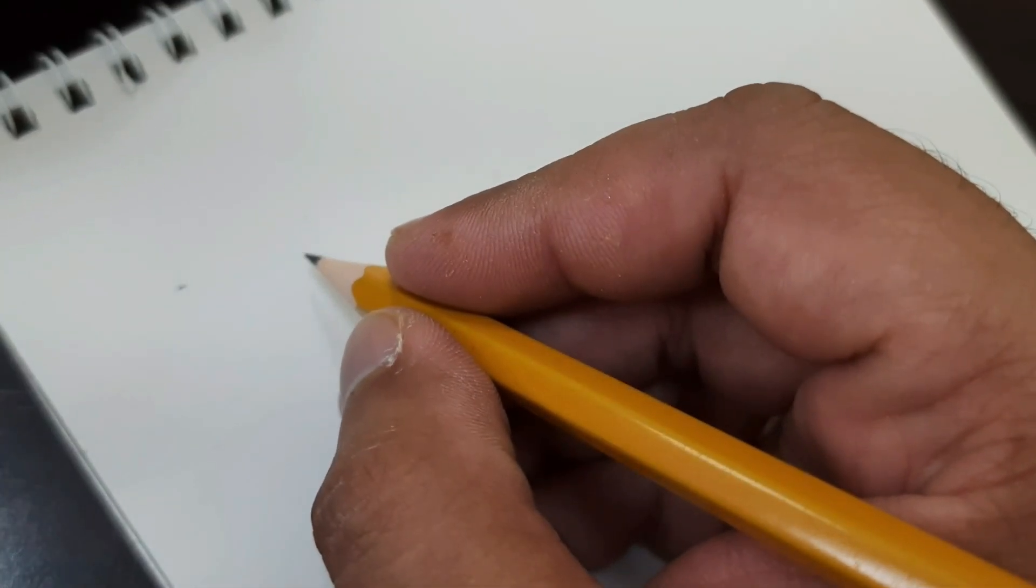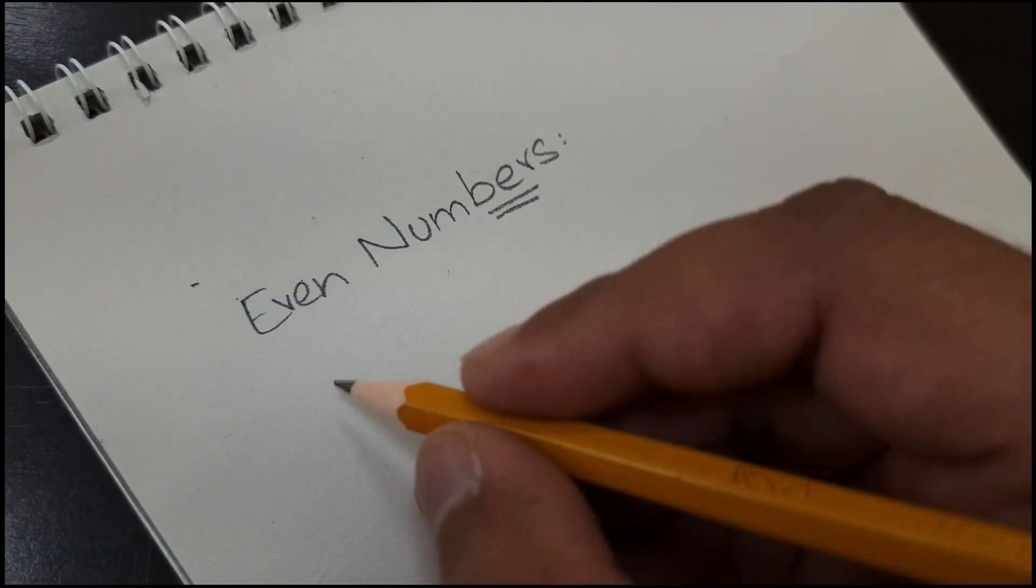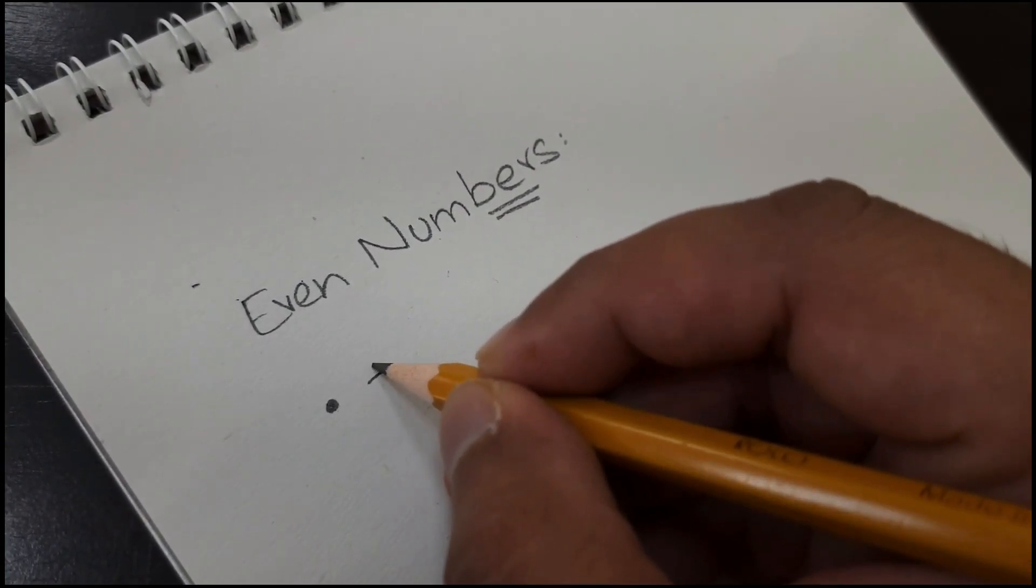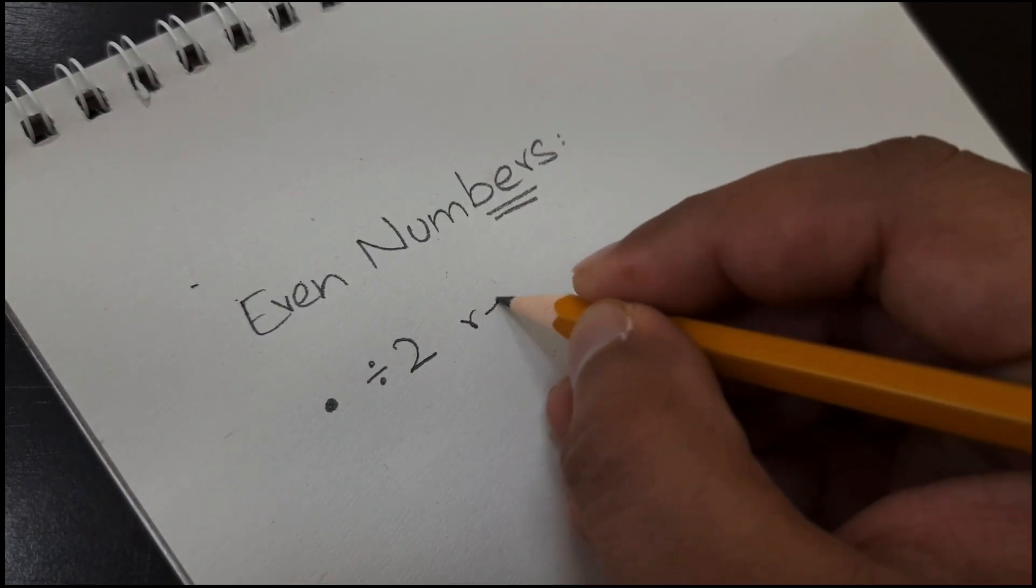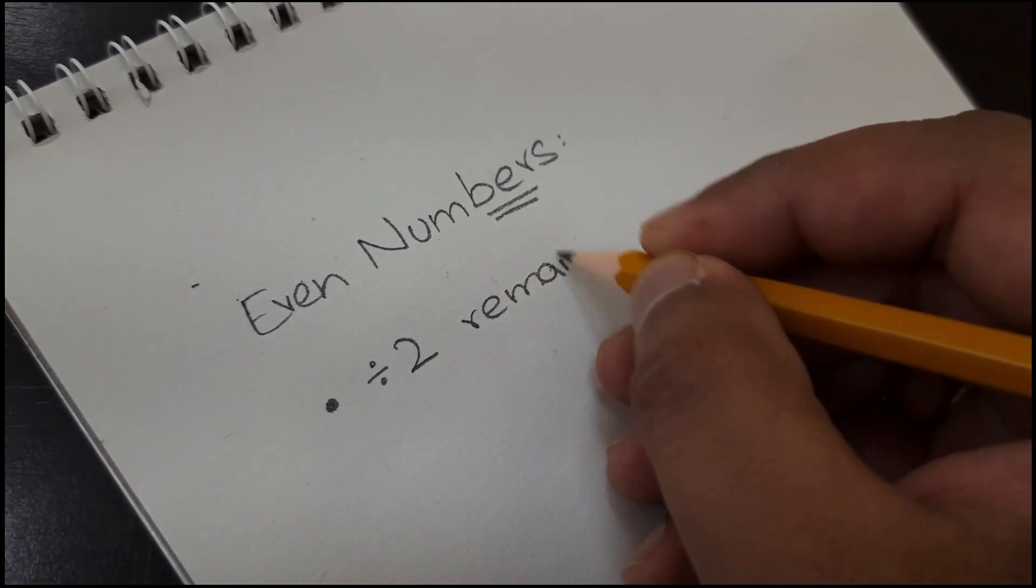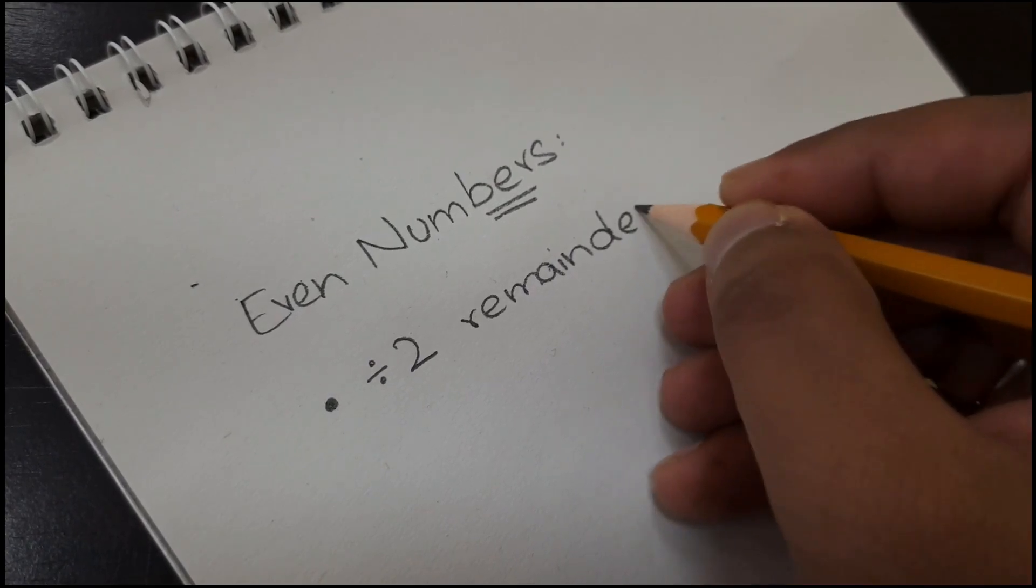Today, we will discuss even numbers. Even numbers are those numbers which are completely divisible by 2, meaning the remainder should be 0.